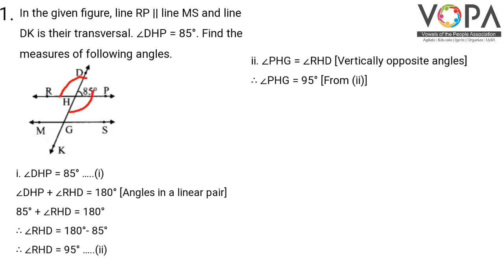Angle PHG is equal to angle RHD as they are vertically opposite angles. Therefore, angle PHG is also 95 degrees.